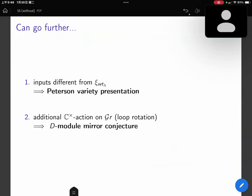This approach can take us further because we can consider inputs different from the affine Schubert classes. And it turns out that we can prove the Peterson variety presentation. And also, we can consider an extra action on the affine Grassmannian, which is a loop rotation. And we can put it in the definition of Seidel-Tsai-Wilkin's map. And it turns out that we can obtain the D-module mirror conjecture.